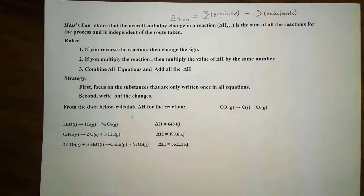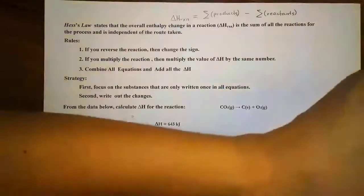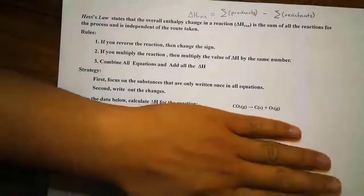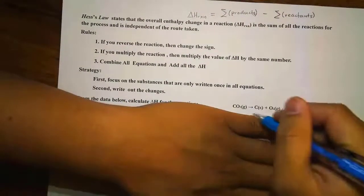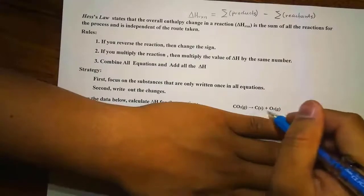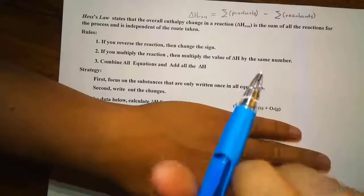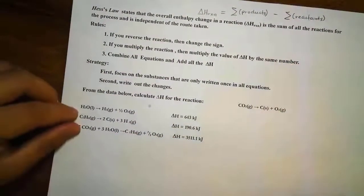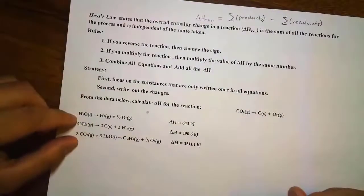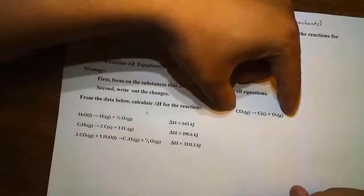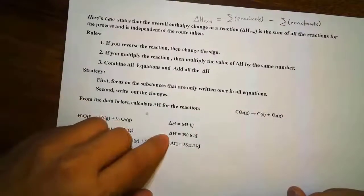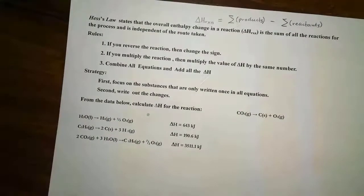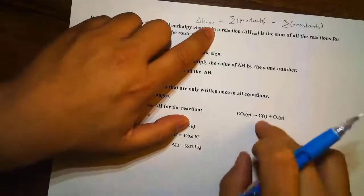That is only when we have the overall chemical equation or reaction telling us we have certain reactants producing a product. But the process of making this product from this reactant does not involve one single reaction — rather, it involves multiple reactions, like three of these right here. Three reactions are required to produce this overall chemical equation, and each one has a specific ΔH.